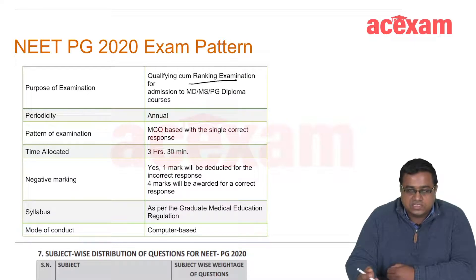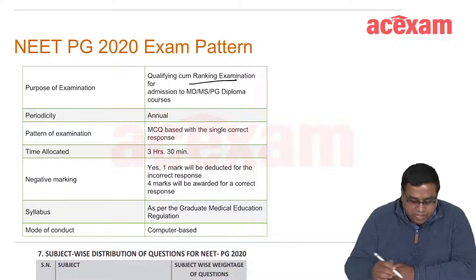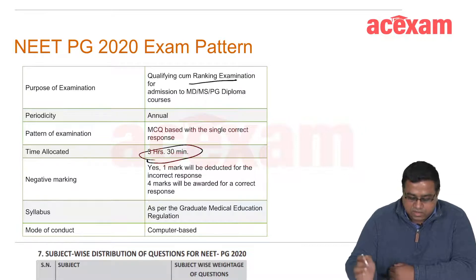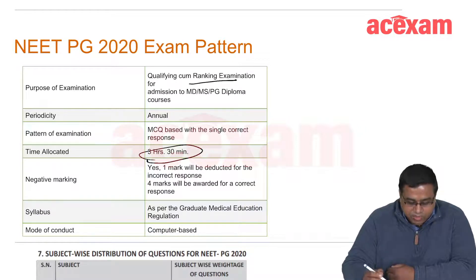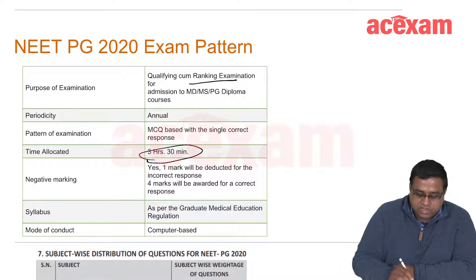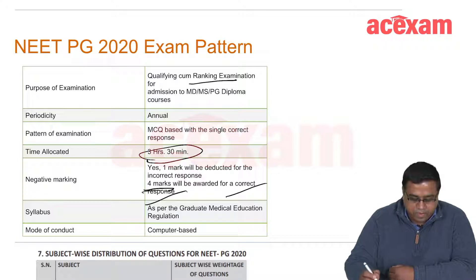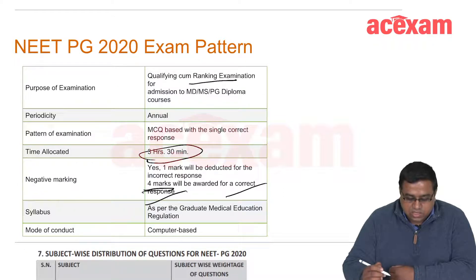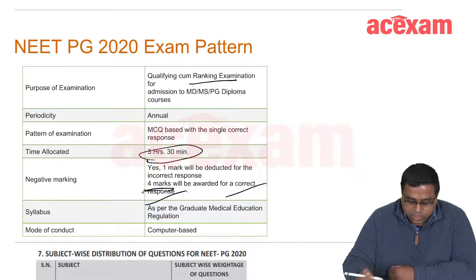The pattern is MCQ-based with four choices and a single best response. Time allotted is 3 hours 30 minutes. Negative marking applies — one mark is deducted for every wrong answer and four marks are awarded for every correct response. The syllabus is as per graduate medical education but covers most topics under medical education, policies, and other things.